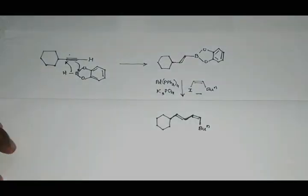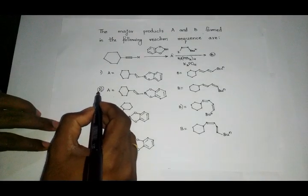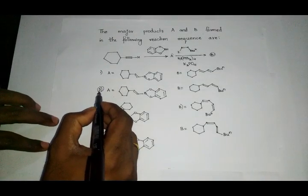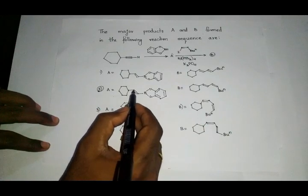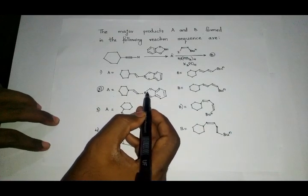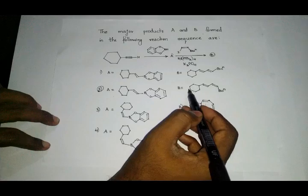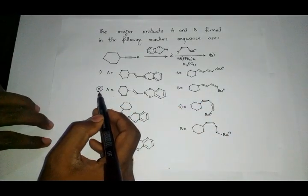So option two becomes the right choice since in A here we have a trans bond and in B this is the product. So option two is the right choice.